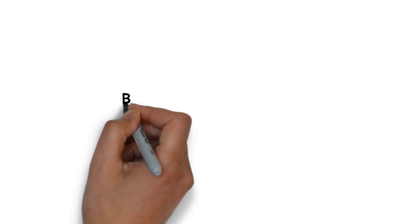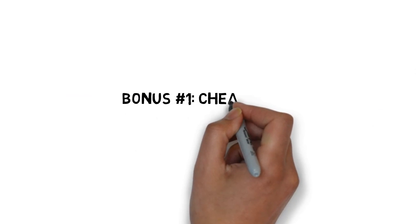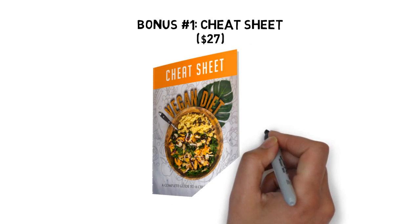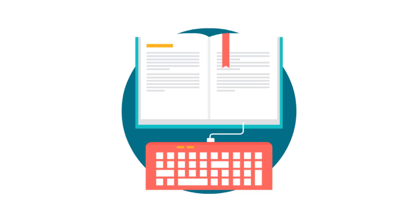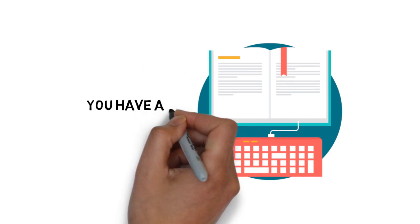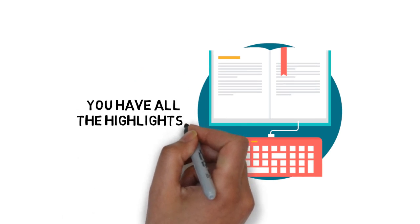Fast action bonus number one, going vegan cheat sheet, valued at $27. This cheat sheet is a handy checklist that makes it easy to get started. It breaks up the entire guide into easy-to-follow steps so that you can make sure you have all the highlights of everything covered inside right at your fingertips.